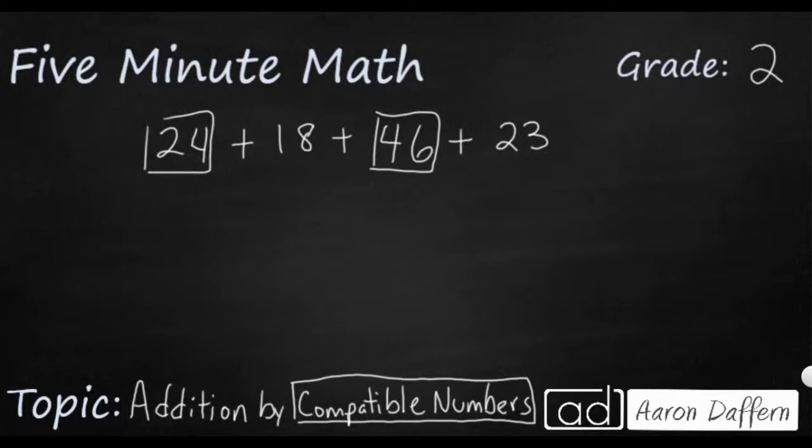Now the commutative property of addition says you can add these numbers in any order. So you don't have to go 24 and then 18 and then 46. What I'm going to do is I'm going to rearrange these. I'm going to add 24 plus 46. So I'm going to bring these two together.